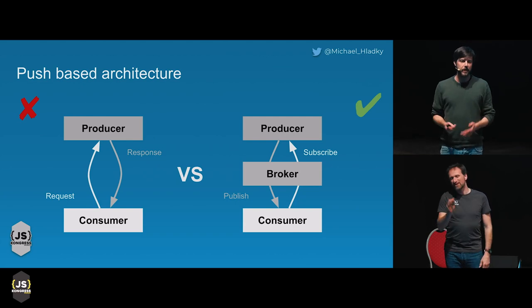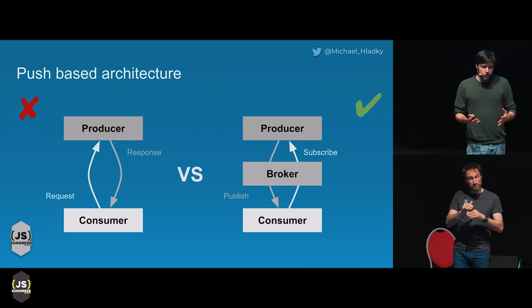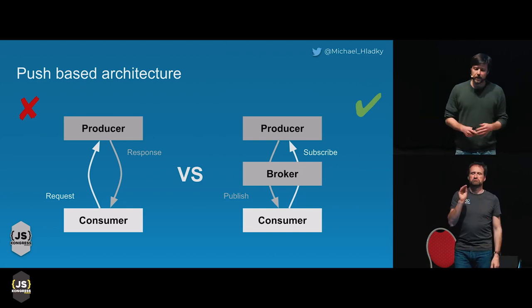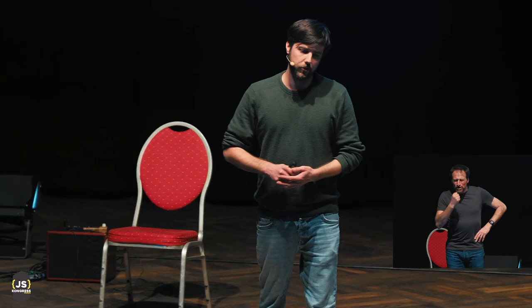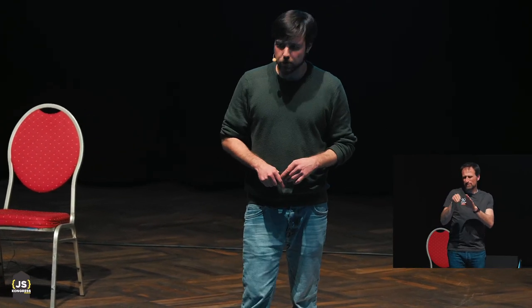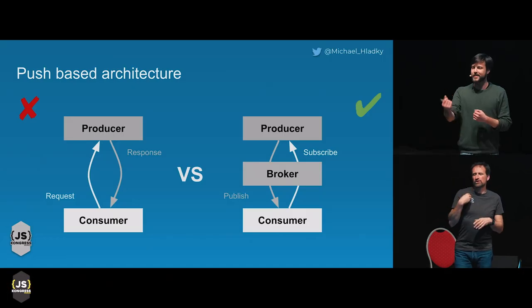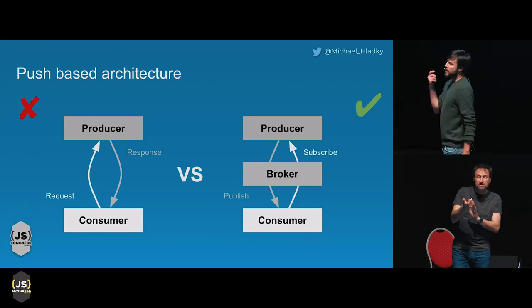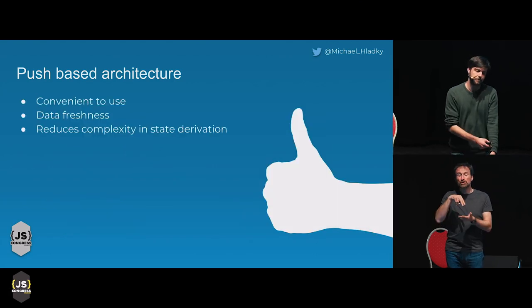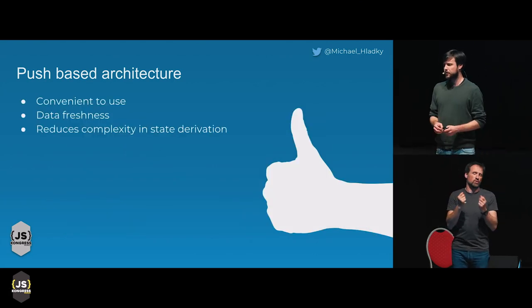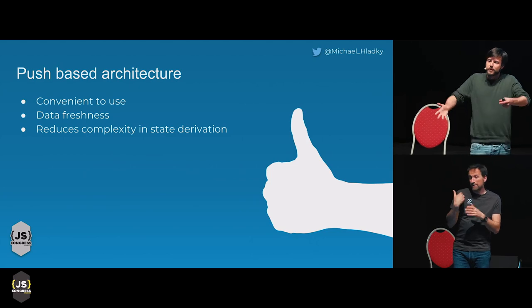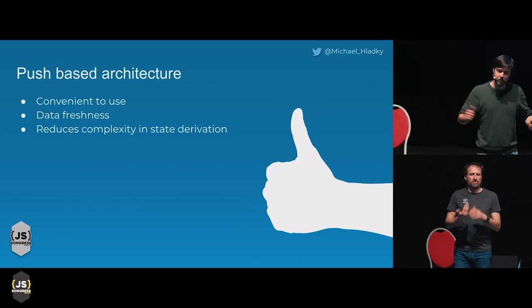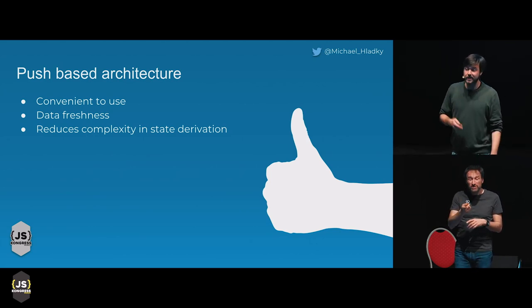Let's start with push-based architecture. With a normal HTTP request, you ask the server for some data and then the server sends you the data. If you want the latest data, you have to ask again. With a push-based architecture, you tell some middleware — called a broker — that you're interested in all the users it stores, and whenever any of those users change, please notify me. Then I do nothing but wait for notifications. I don't have to pull the state again and again. This is really powerful in state management in the frontend: it's super convenient, your data is always fresh, and it reduces the complexity in state derivation.